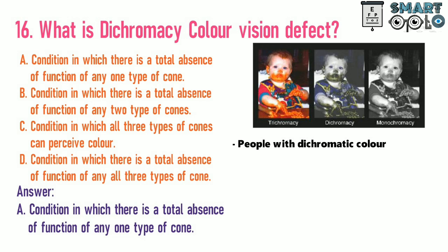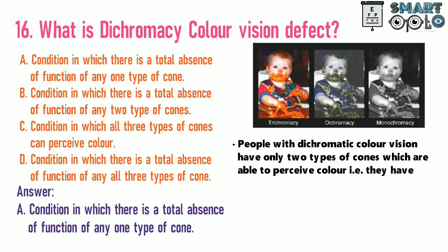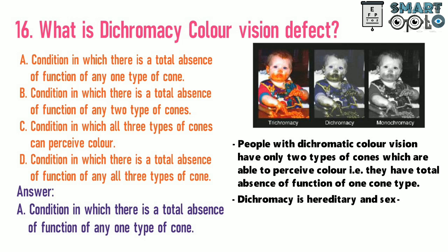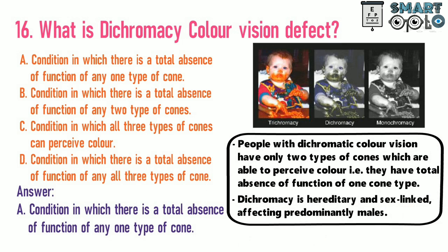People with dichromatic color vision have only two types of cones which are able to perceive color; that is, they have a total absence of function of one cone type. Dichromacy is hereditary and sex-linked, affecting predominantly males.